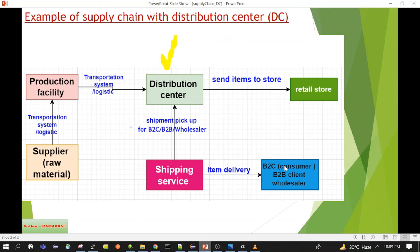Items can also be received at the distribution center through the reverse flow — meaning a customer has raised a return. That return parcel is collected by the courier service, which sends the item to the distribution center. The distribution center will inspect the item, carry out whatever necessary steps are needed, and then raise a request for a refund. The returned item at the distribution center will again become part of the inventory.